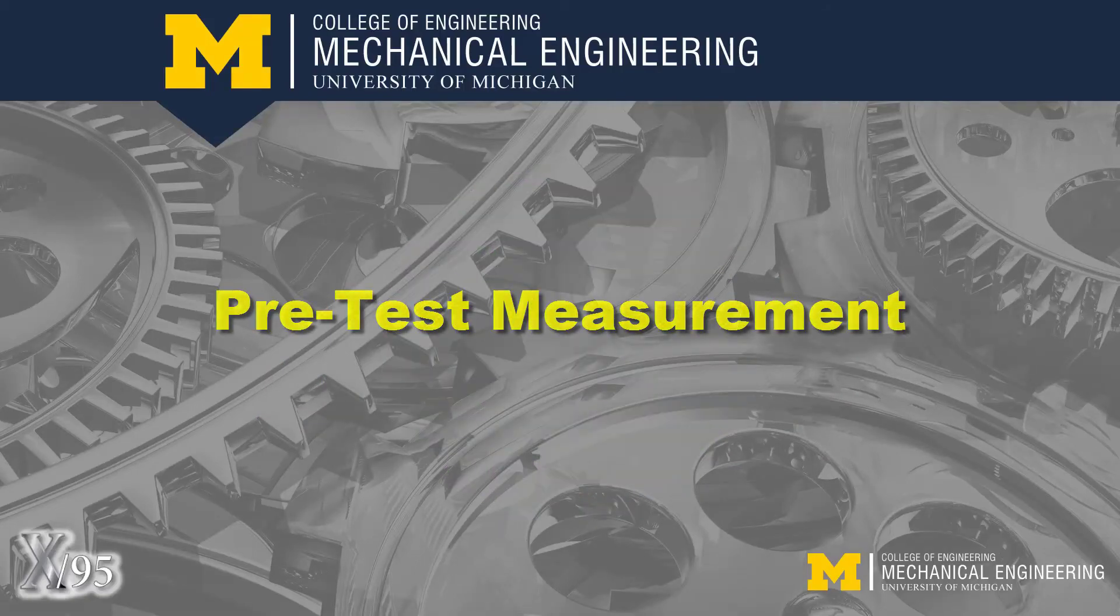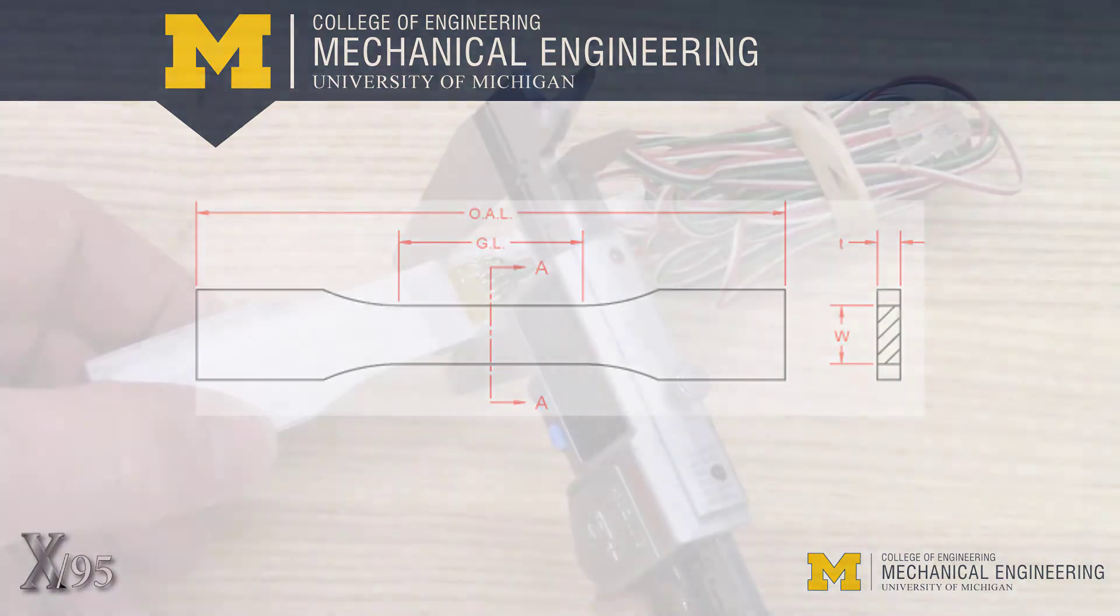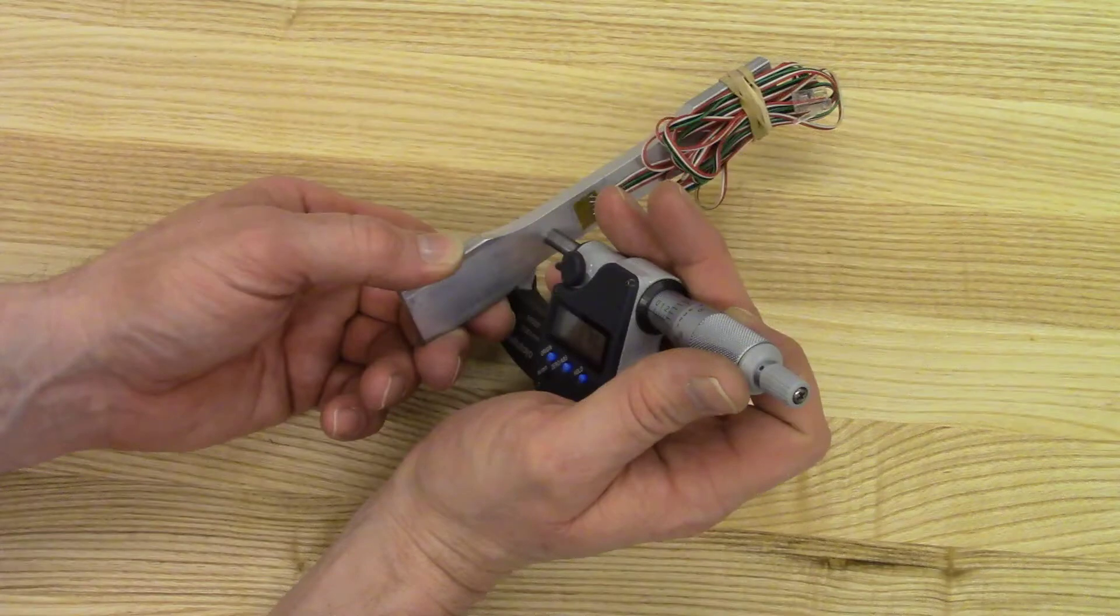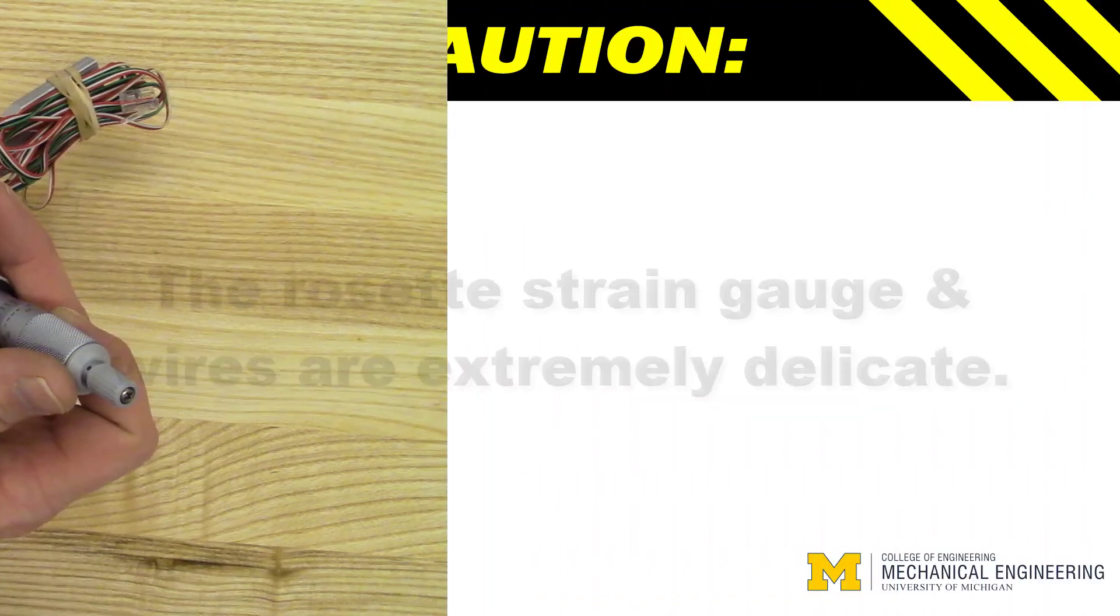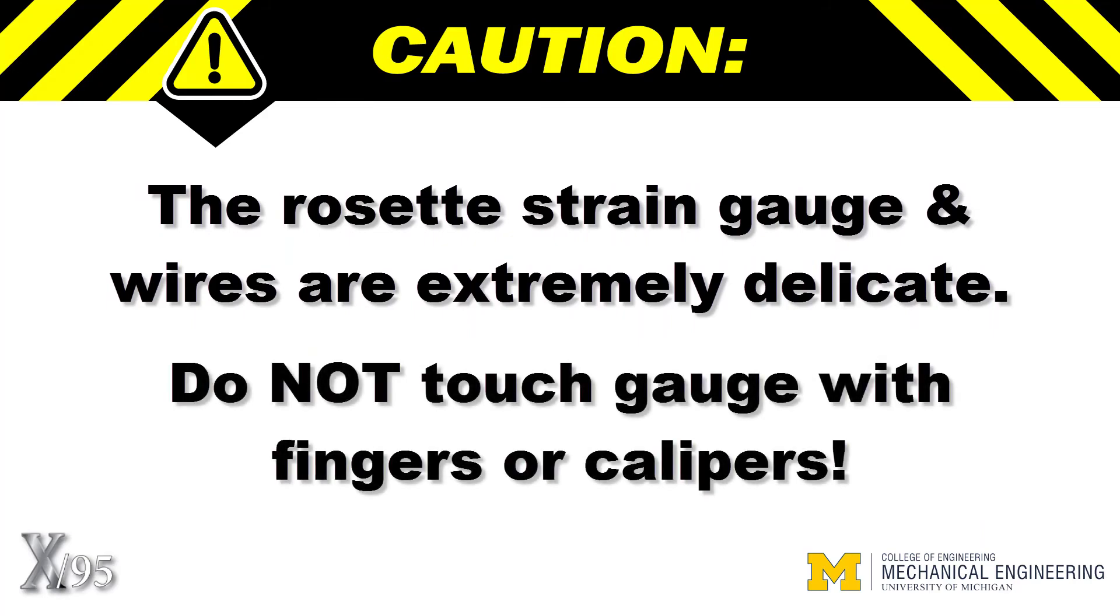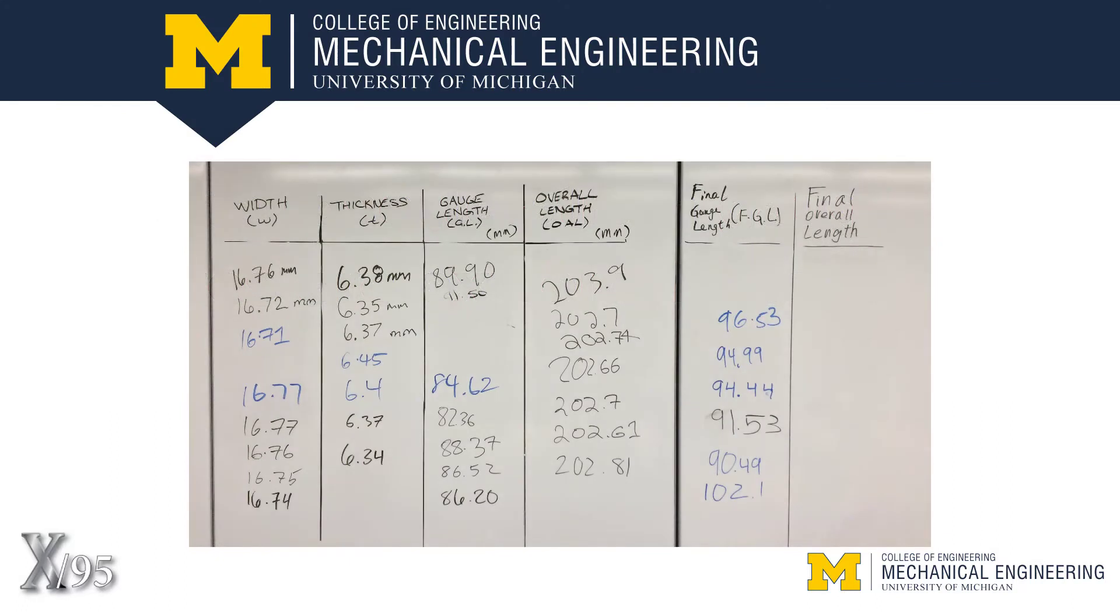Obtain an instrumented dog bone specimen and measure the width, thickness, gauge length, and overall length using the digital caliper and micrometer. The rosette gauge and wires are extremely delicate. Do not touch the rosette or contact with calipers. For replication, have several students measure the specimens and record on the front board to share with the entire lab section.